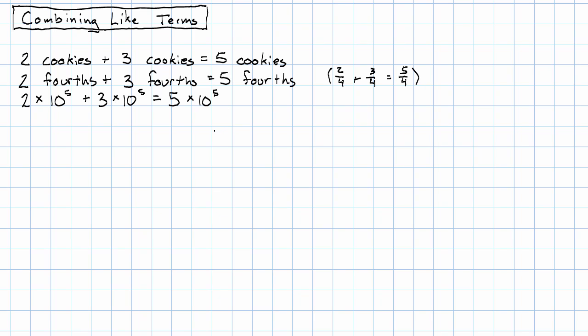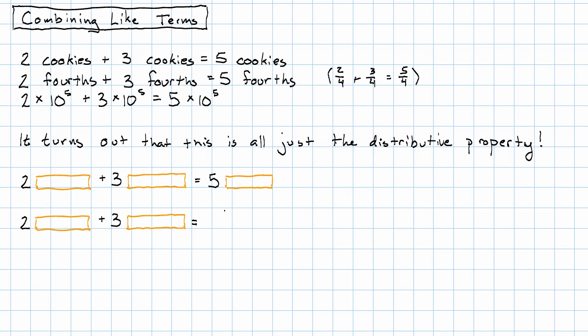And when we saw it in scientific notation, we started to justify why two copies of whatever I happen to be thinking of, plus three copies of that same thing will always give me five copies of that same thing. Why is that? Well that's just the distributive property. Instead of multiplying and then adding, I can add together my two plus three first, and then multiply.